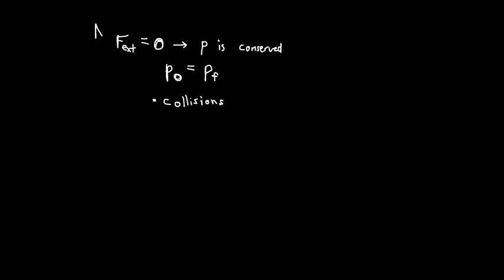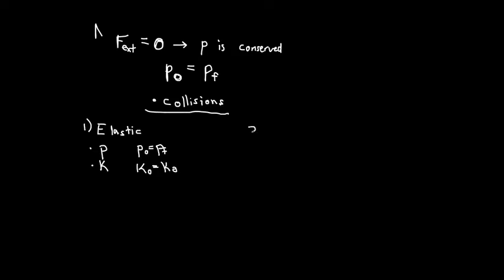To understand collisions, we need to know there are two types. The first is called an elastic collision. In an elastic collision, we conserve momentum — P initial equals P final — and we conserve kinetic energy, so K initial equals K final. The second type is an inelastic collision. In an inelastic collision, with no external forces, momentum is still conserved, but kinetic energy is not conserved. There's a special subclass called a perfectly inelastic collision, where two objects collide and stick together.